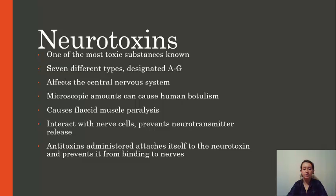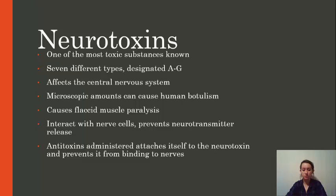They attack the central nervous system by interacting with nerve cells, and eventually they can block neurotransmitters from releasing signals to other cells. This halts muscle movement and can cause flaccid muscle paralysis. It usually occurs symmetrically and moves down the arms, legs, or respiratory muscles. Only microscopic amounts of these toxins are needed to cause human botulism.